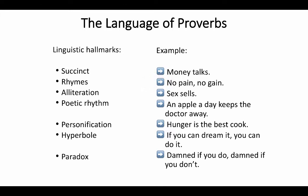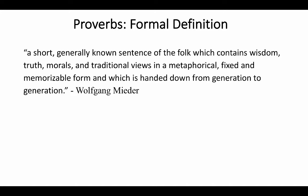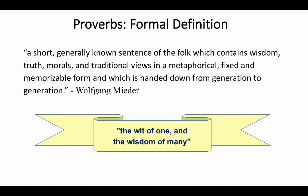Why are proverbs worded this way? The answer is simple—they're grounded in oral tradition. All of these linguistic hallmarks make them easy to remember. Researchers in the field of paremiology have found it challenging to come up with a concise definition, but here's the best one, by Wolfgang Mieder, a top proverbs scholar: 'A proverb is a short, generally known sentence of the folk which contains wisdom, truth, morals, and traditional views in a metaphorical, fixed, and memorizable form, and which is handed down from generation to generation.' Or, as Lord Russell put it, 'the wit of one and the wisdom of many.'